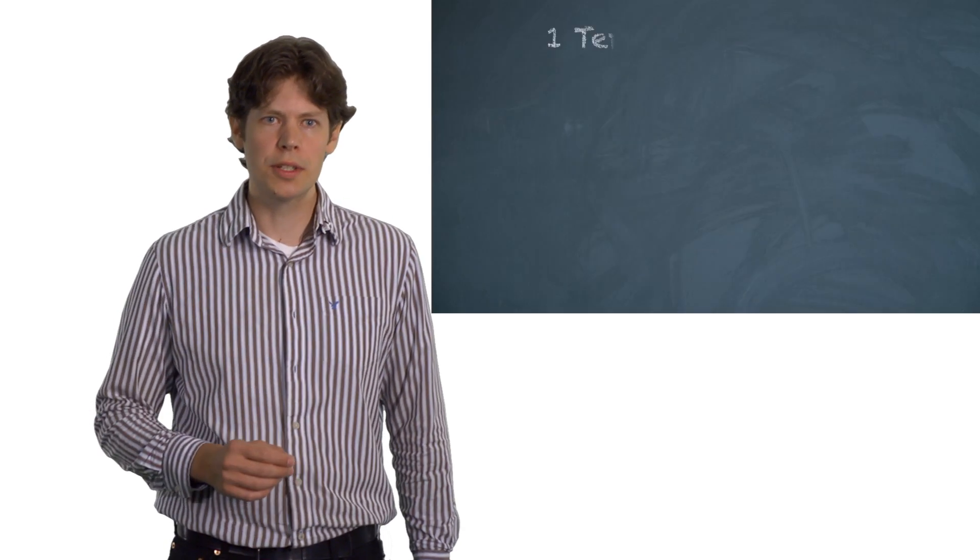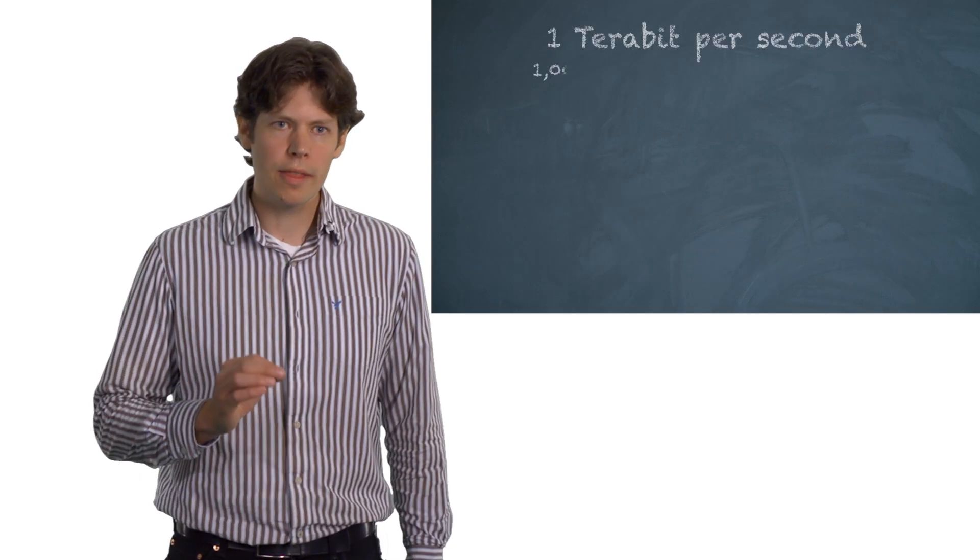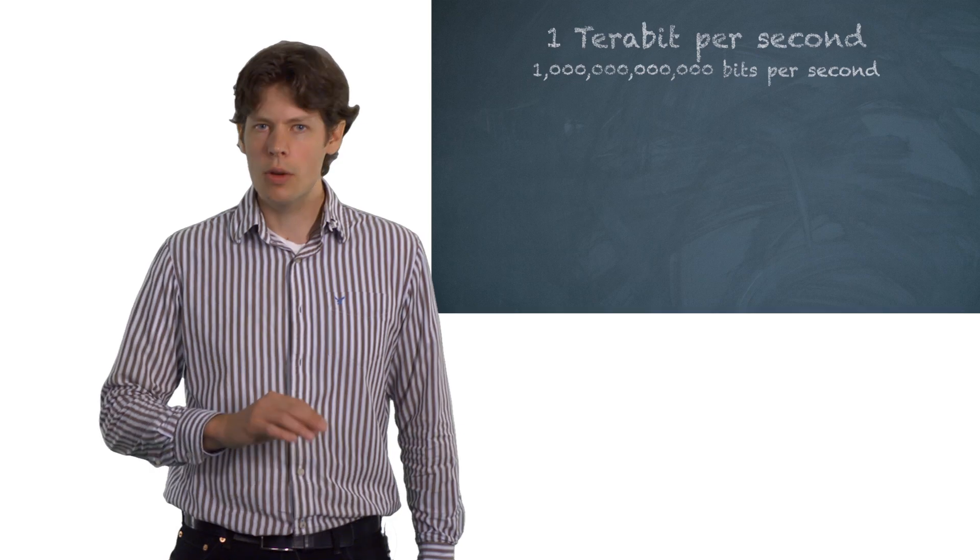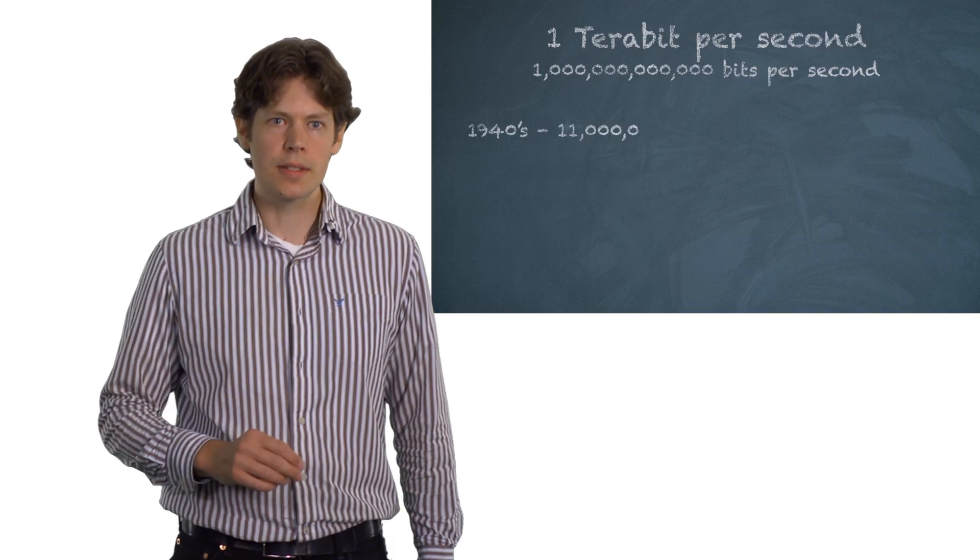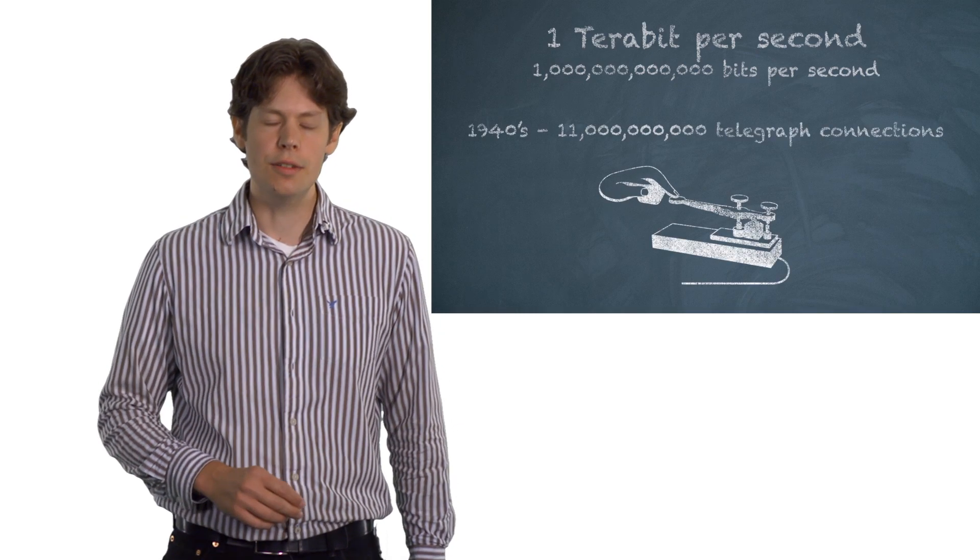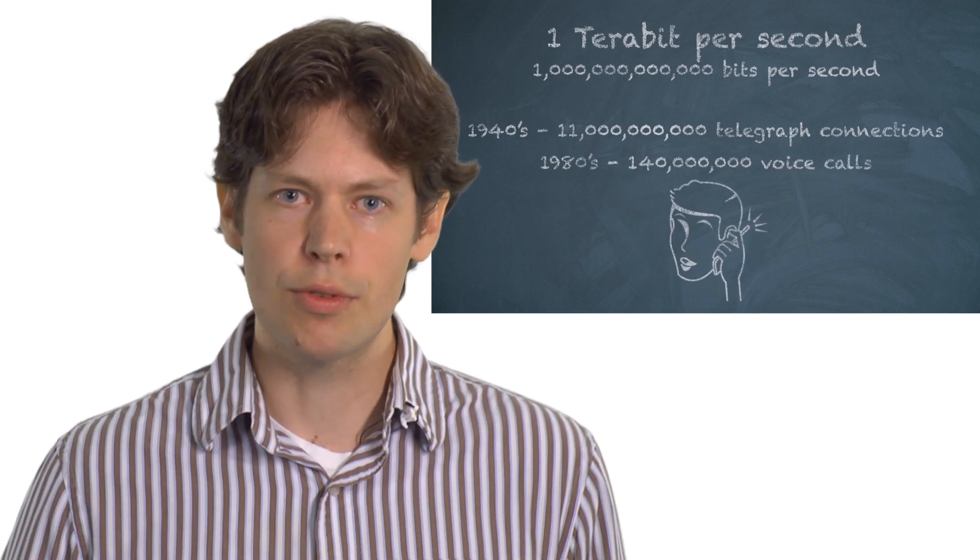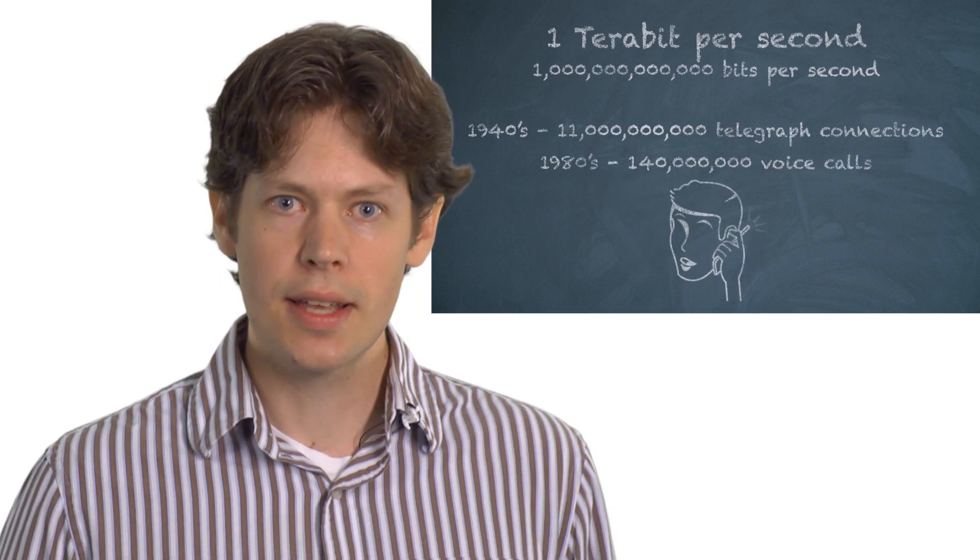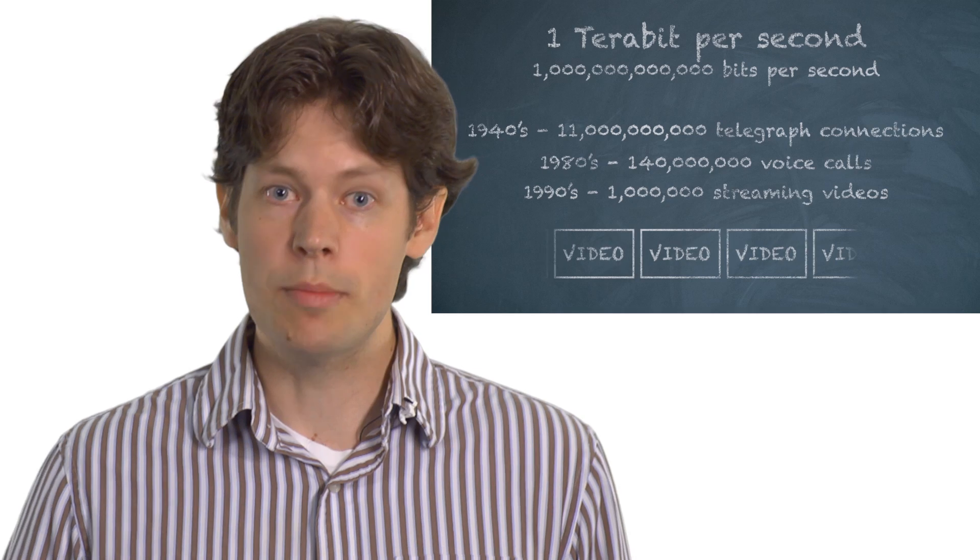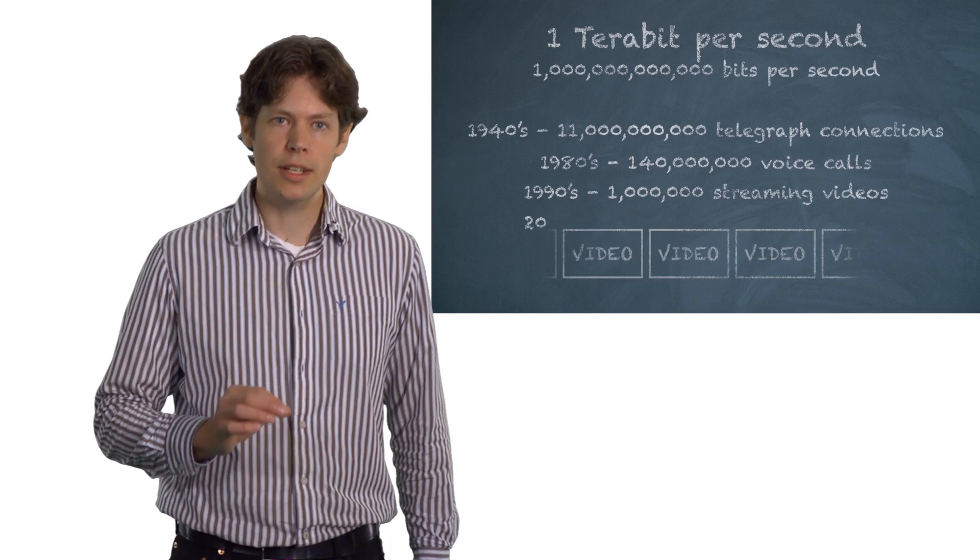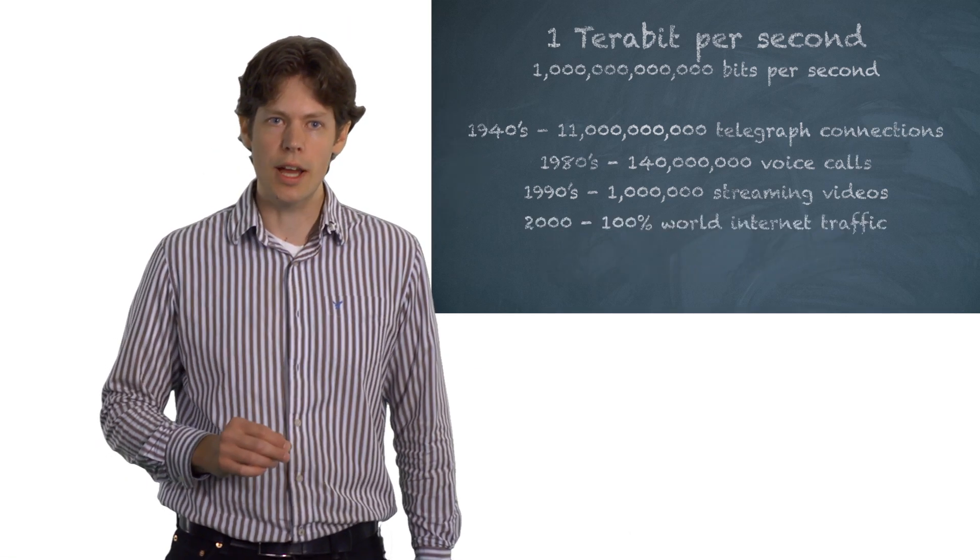First, some perspective on one terabit per second. One thousand billion bits per second would have transmitted 11 billion simultaneous telegraph sessions in the 1940s. In the 1980s, 140 million simultaneous voice calls. In the 1990s, a million simultaneous streaming videos. It's enough capacity to have carried the entire world's internet traffic in 2000.